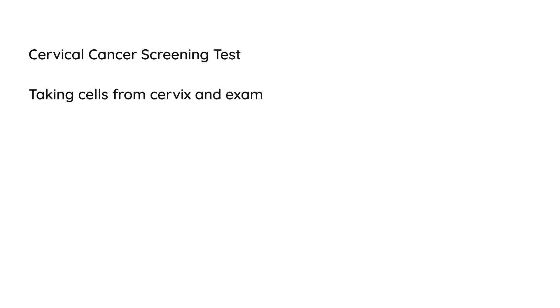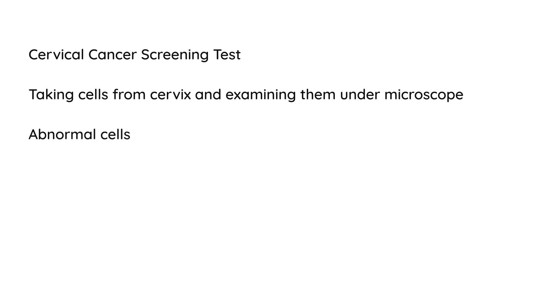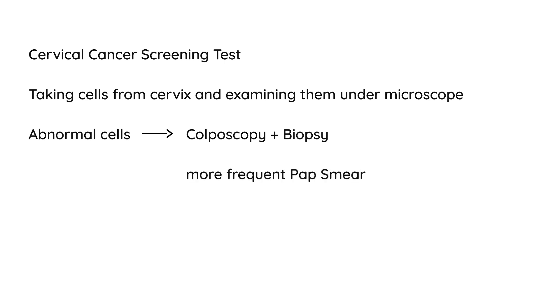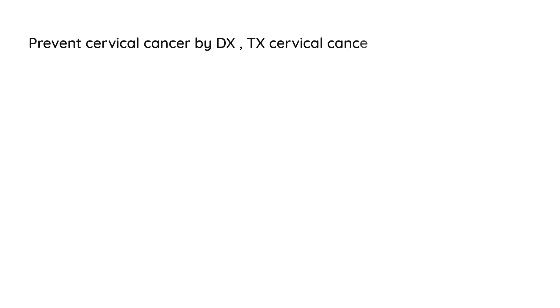Pap smear is, of course, a cervical cancer screening test. Essentially what you're doing with this test is taking cells from the cervix and examining them under a microscope. That allows you to look for any abnormality in these cells. If you do see abnormal cells, you can do more specific tests such as a colposcopy and a biopsy, and sometimes more frequent pap smears. Essentially, you're trying to prevent cervical cancer by diagnosing and treating cervical cancer precursors.